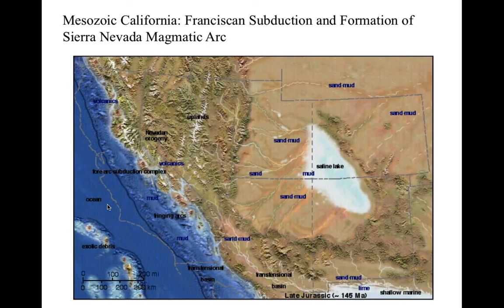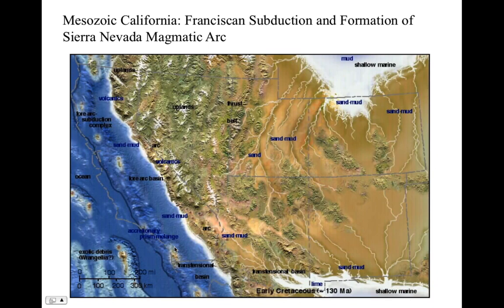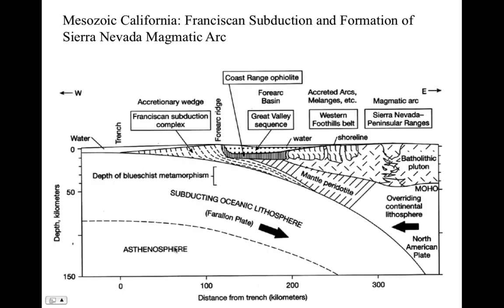And then Mesozoic California — Franciscan subduction and formation of the Sierra Nevada Magmatic Arc. And the last picture I want to show you is the one from your textbook — this is in chapter 18, showing that same subduction zone. So you can look at this in chapter 18, where we see the Coast Range Ophiolite, the Great Valley Sequence, the Franciscan Complex, the Batholith over here, the Sierra Nevada Magmatic Arc, and all the accreted terrains that occur in this foothills belt right here.